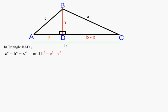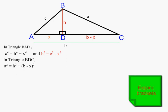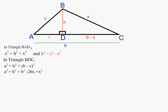Let's look at triangle BDC. Again using Pythagoras's theorem, we can see that a squared equals h squared plus (b minus x) all squared. We'll expand the brackets, and that gives us h squared plus b squared minus 2bx plus x squared.